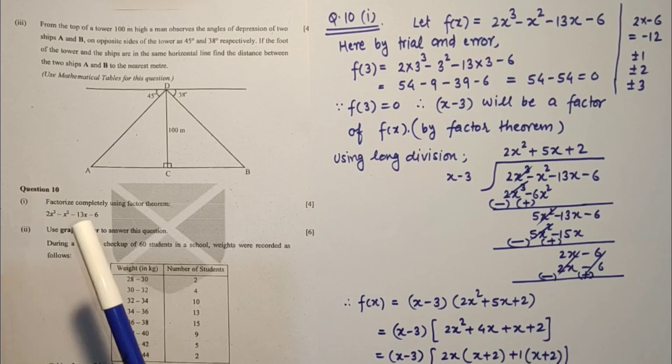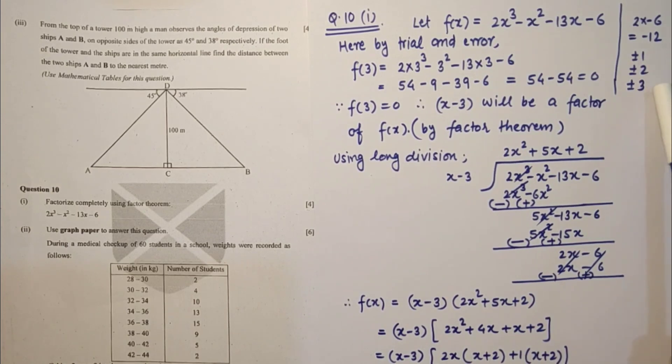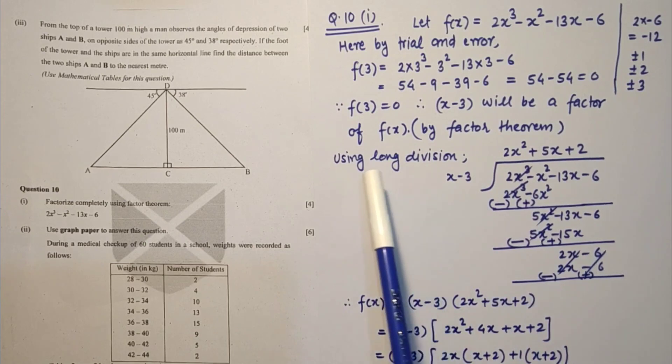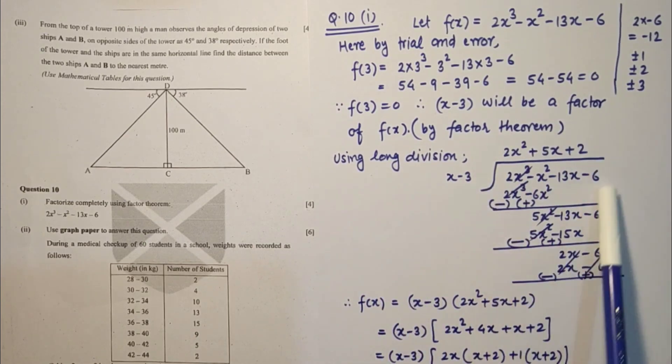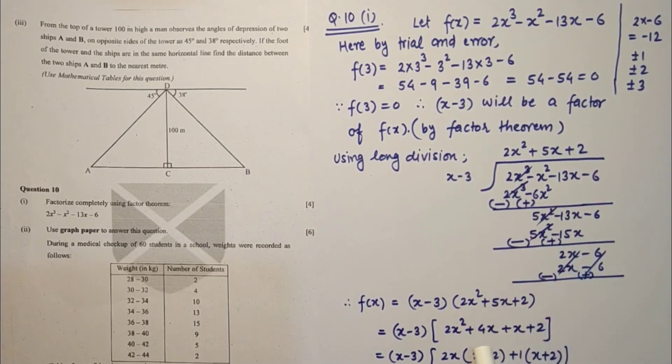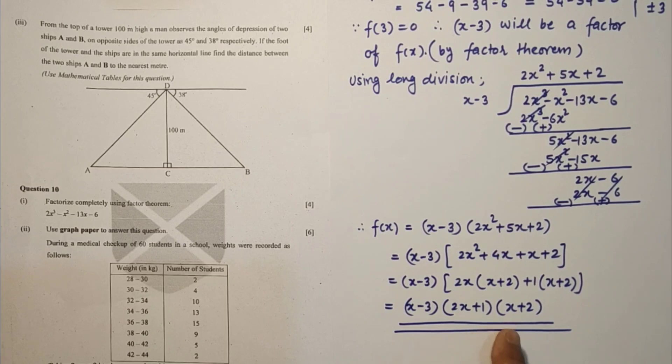Question number 10 first sub part. Factorize completely using factor theorem. Minus 6 into 2 is minus 12. Factors of minus 12 is plus minus 1, plus minus 2, plus minus 3. By trial and error, if we put X as 3 then it is coming 0. By factor theorem then X minus 3 will be a factor. Now using long division, after division we are getting quotient as 2X squared plus 5X plus 2. Factorize it. So the three factors are X minus 3, 2X plus 1, and X plus 2. This is the answer.